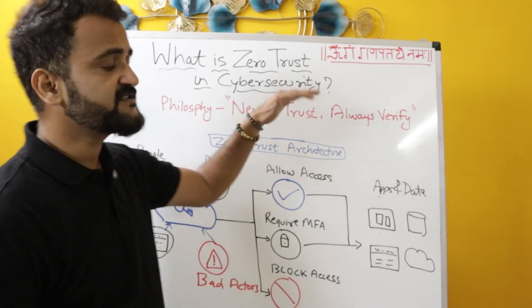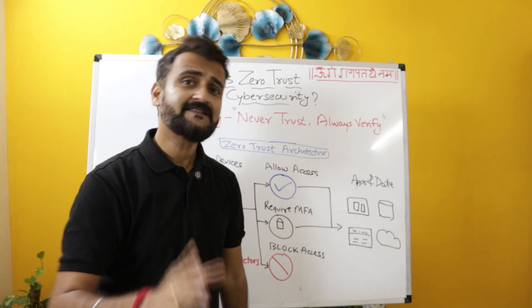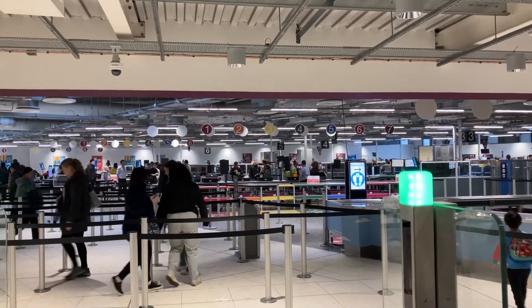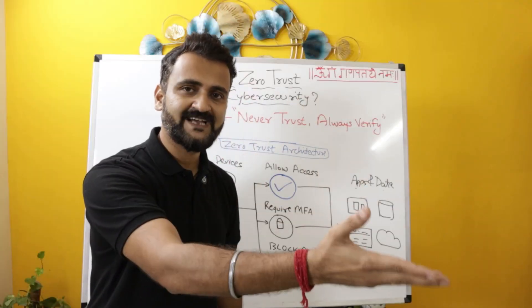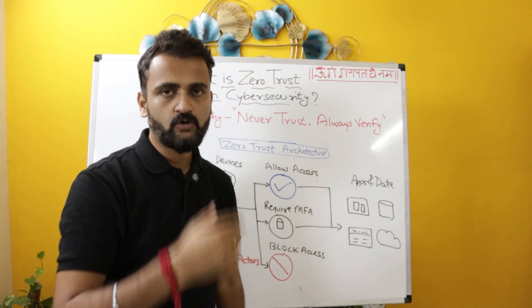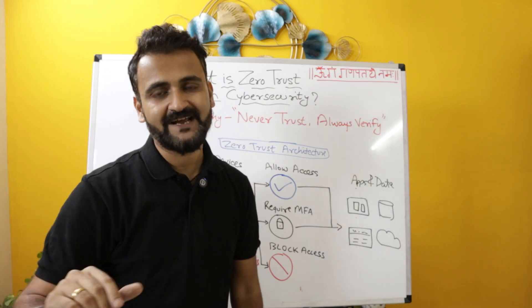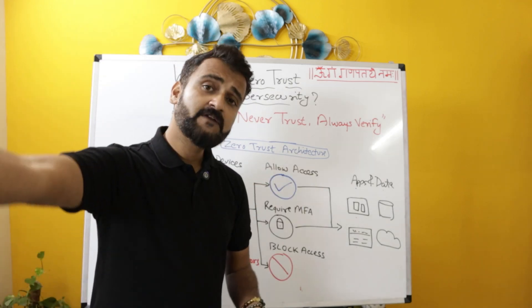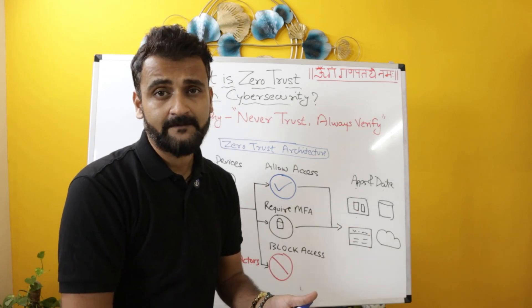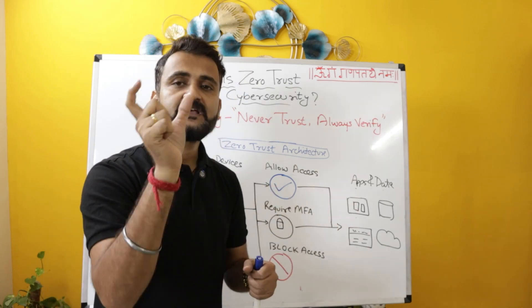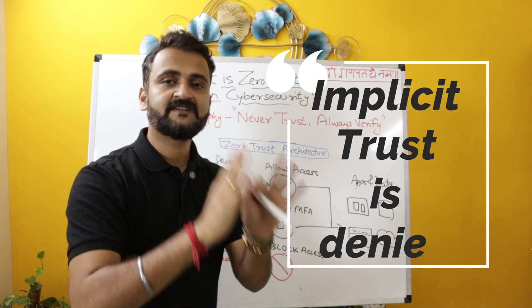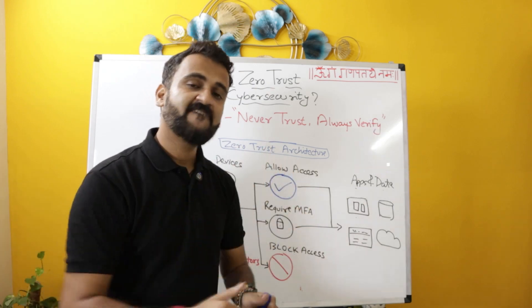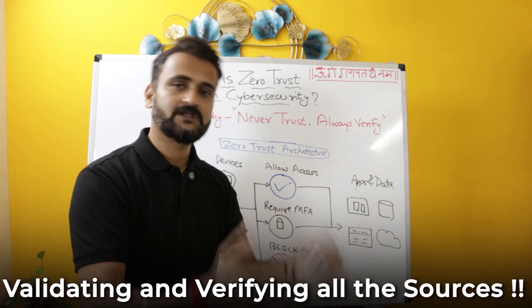The core philosophy is never trust, always verify. The real life example for this is airport security. When you go to the airport to catch a flight, at the entrance you have to show your boarding pass and ID card to security personnel. Then at the check-in counter, you show it again. Then at the security check-in, you are scanned, and even while boarding, your boarding pass is verified. So at all places, trust is not assumed — implicit trust is denied in the zero trust model. You have to validate and verify every source, all the time.